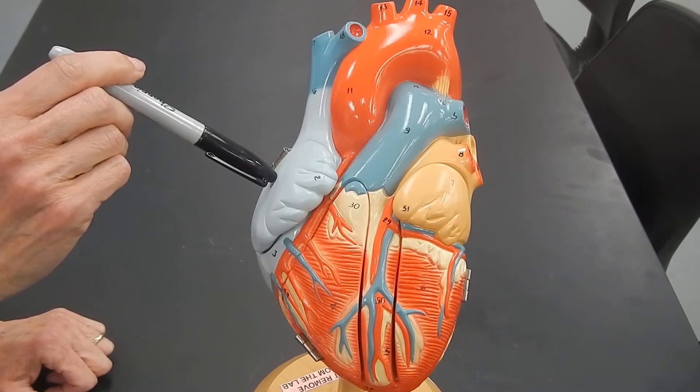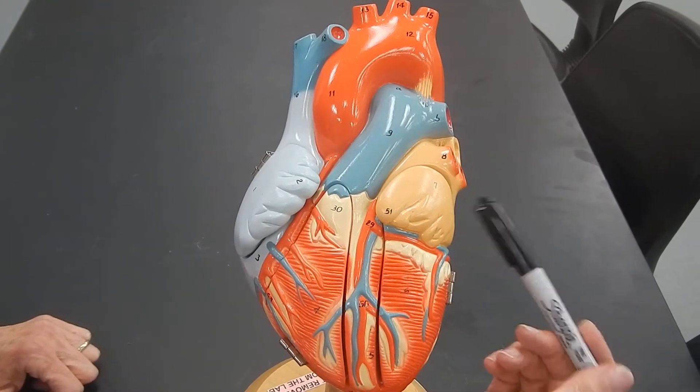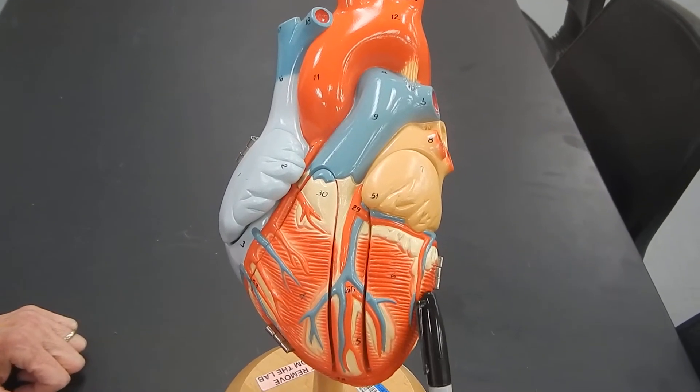This is the right atrium. This is the left atrium. This is the right ventricle, and this is the left ventricle.